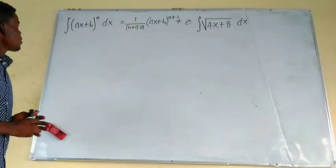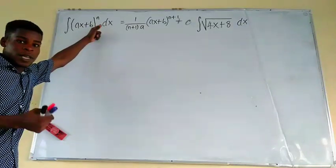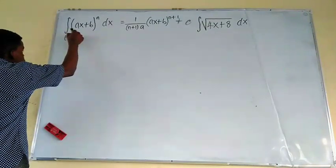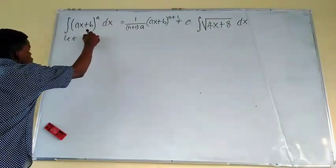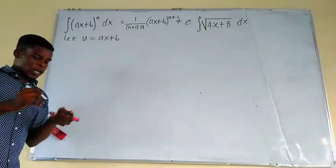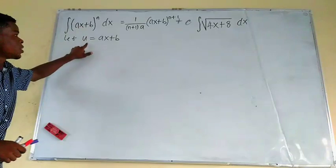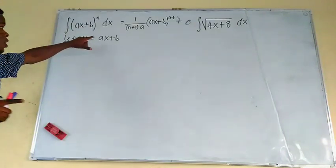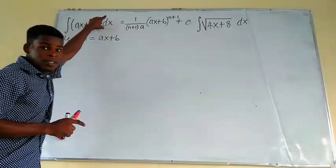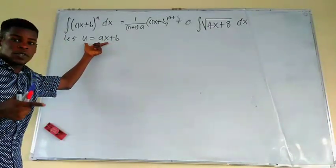So I'm going to do by change of variable, I'm trying to reduce this to a simpler form. If I have something like a particular variable, let's say U to some power N, I'm going to quickly apply my power rule. So I'm going to say let U be equal to AX plus B. If U is equal to AX plus B, then we can actually change this place right here to U.